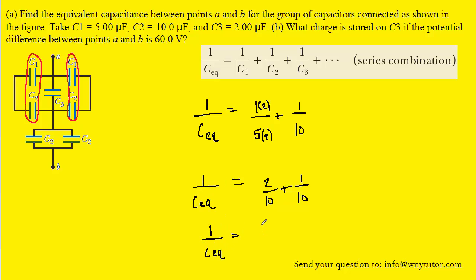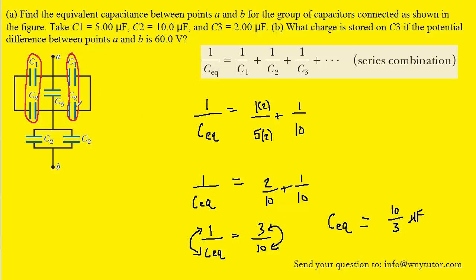Adding together, we get 3 over 10. Now be careful — this is not the equivalent capacitance, because what we still have to do is flip both sides around. You are certainly allowed to do that whenever you have a single fraction equaling another single fraction. So if we flip those sides around, we're going to end up with CEQ equal to 10 over 3, and the unit is microfarads. So that's the equivalent capacitance by combining C1 and C2 on both the right side and the left side.